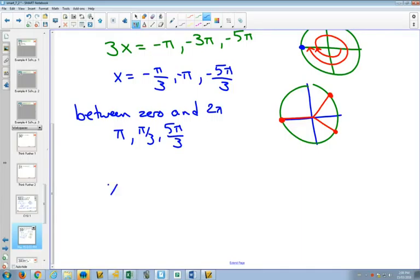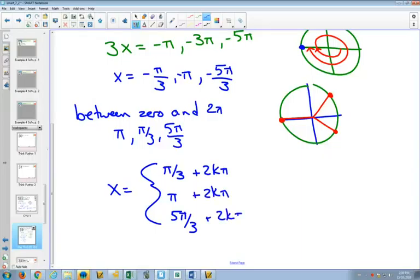And negative 5 pi over 3 would be like going into quadrant 4 if it was positive. So if I'm going in the other direction, that would be there. So if we wanted to list those between 0 and 2 pi, that would be pi over 3, pi, and 5 pi over 3. Are you OK with that? So our picture, we've got a pi over 3 member in quadrant 1. That's pi over 3. We've got our pi over 3 member in quadrant 4. That's 5 pi over 3. And we've got pi. So our general solution, list all of your answers between 0 and 2 pi and add 2k pi.